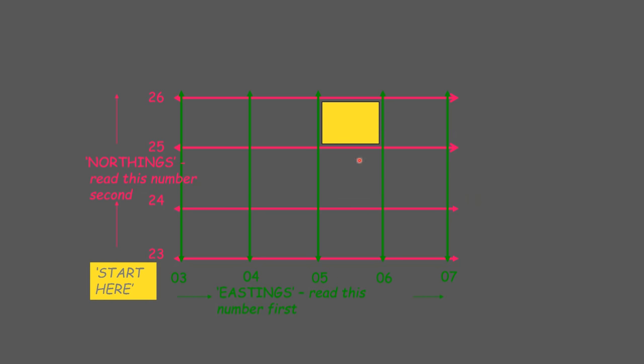Now look at this yellow box. If we want to tell where this yellow box is on a grid the first thing that we need to do is we need to read the eastings. We check 03, no, 04, no, 05. 05 is the first line or the first easting that comes into contact with this box.